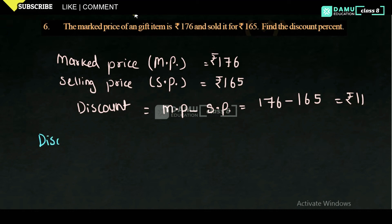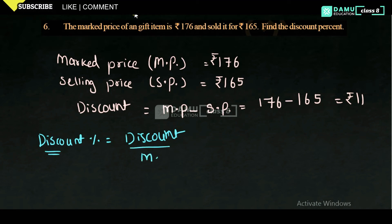So what is the discount percentage formula? Discount percentage is calculated as discount divided by market price, multiplied by 100. For all discount calculations, the denominator is always market price. If it is profit percentage, it is profit by cost price. If it is loss percentage, it is loss by cost price. So here, discount percentage = 11 divided by market price 176, into 100.